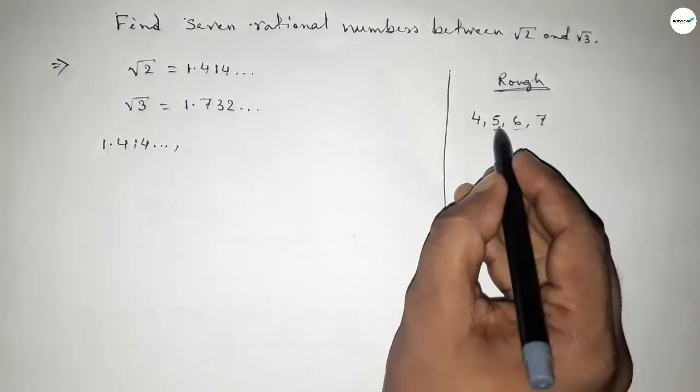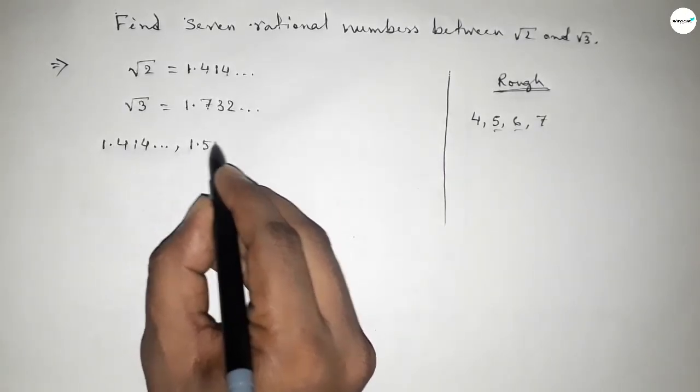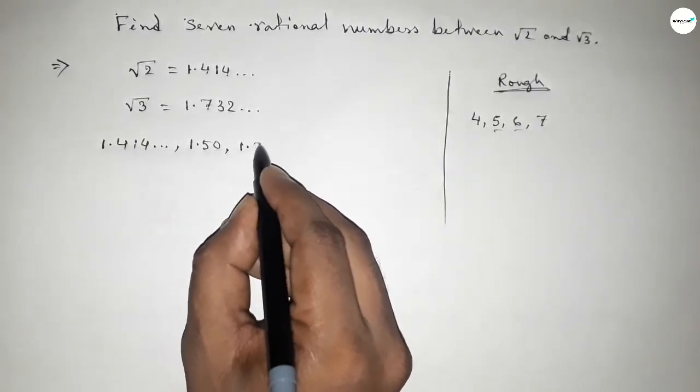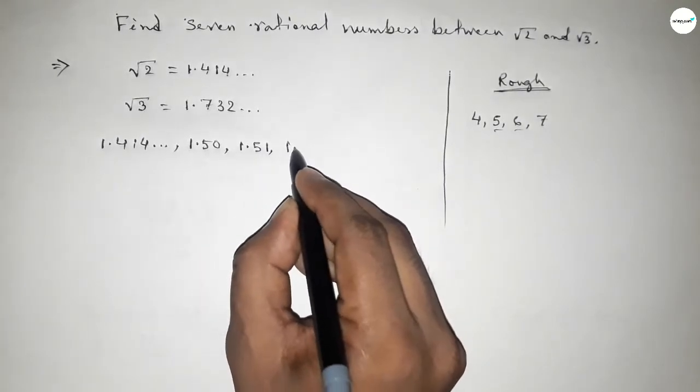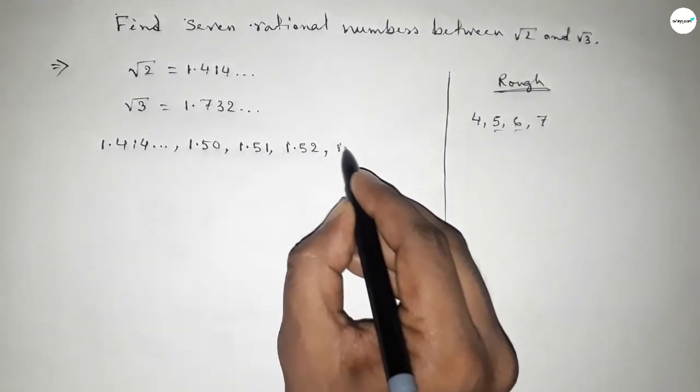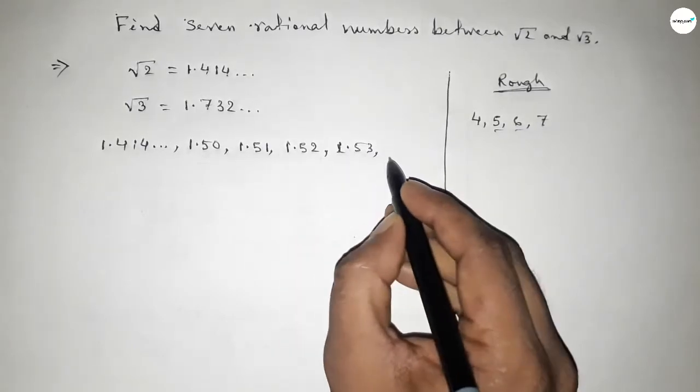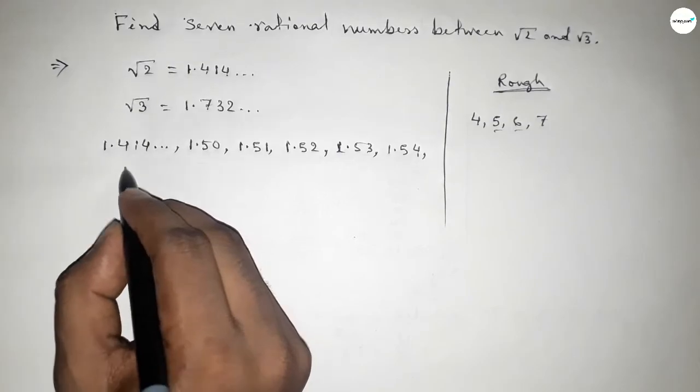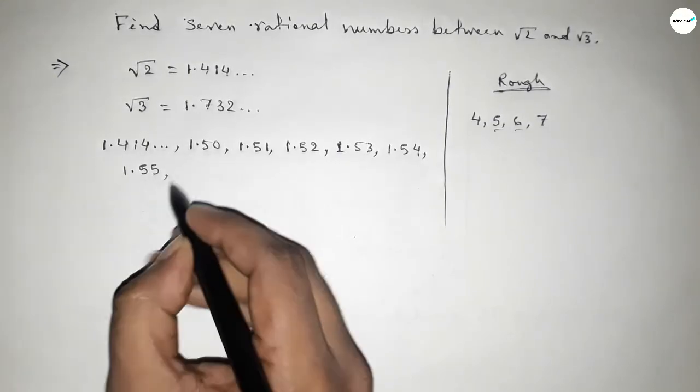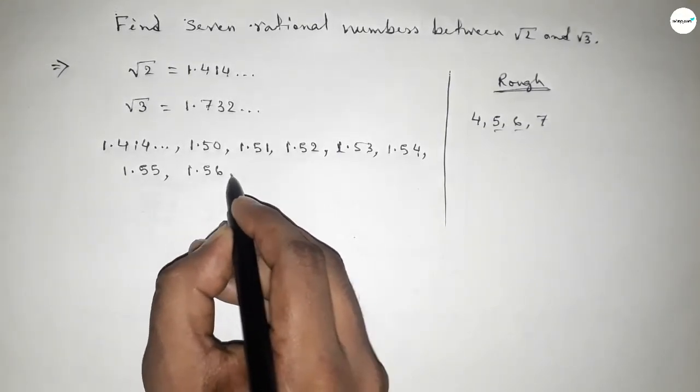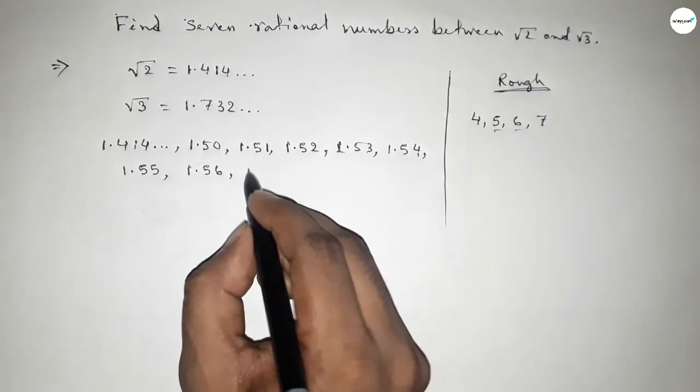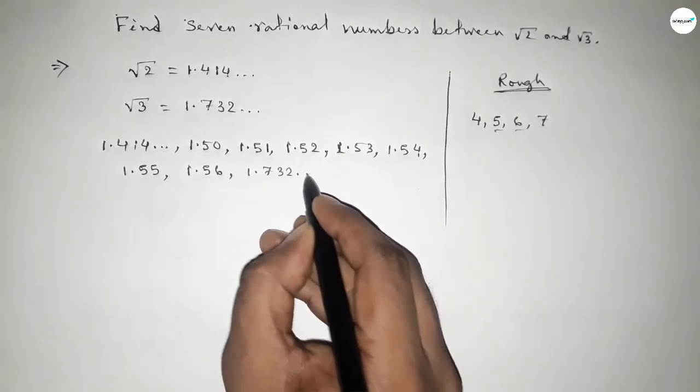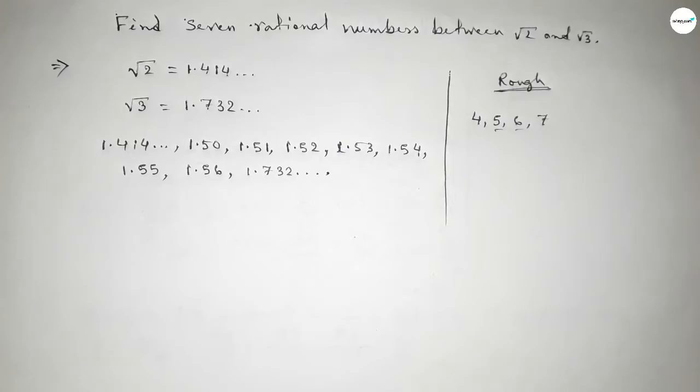So we write seven rational numbers by this way: 1.50, 1.51, 1.52. If you want to take six, then you can write 1.60, 1.61, 1.62. This is 1.55, 1.56, and 1.73 continuous. These are the required seven rational numbers between √2 and √3.